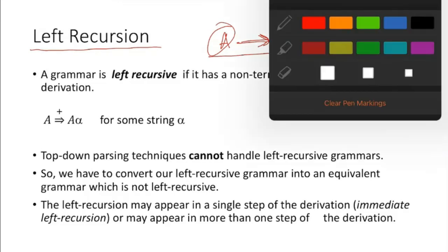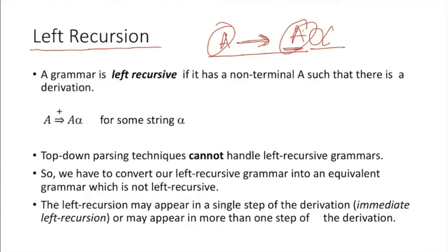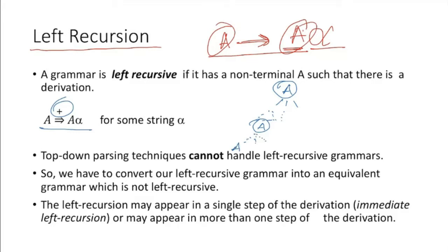But sometimes it may not be immediate. After every one or more derivations, the situation can arrive. You have started deriving with A, and after some time, at the leftmost position, you are getting A again. If you expand this A again, after some time you are going to get another A.